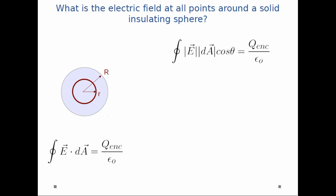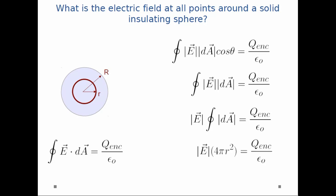I expand the dot product. The angle between E and dA is 0. So, cosine 0 is just 1. E is a constant, so I can pull it out of the integral. Integral dA is just the surface area of the sphere.